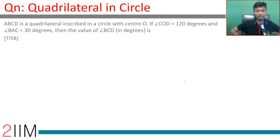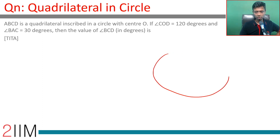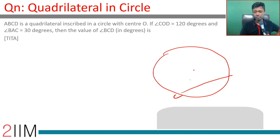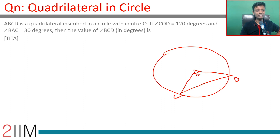ABCD is a quadrilateral inscribed in a circle with center O. Angle COD is 120 degrees, so let's draw COD first — it's 120 degrees.